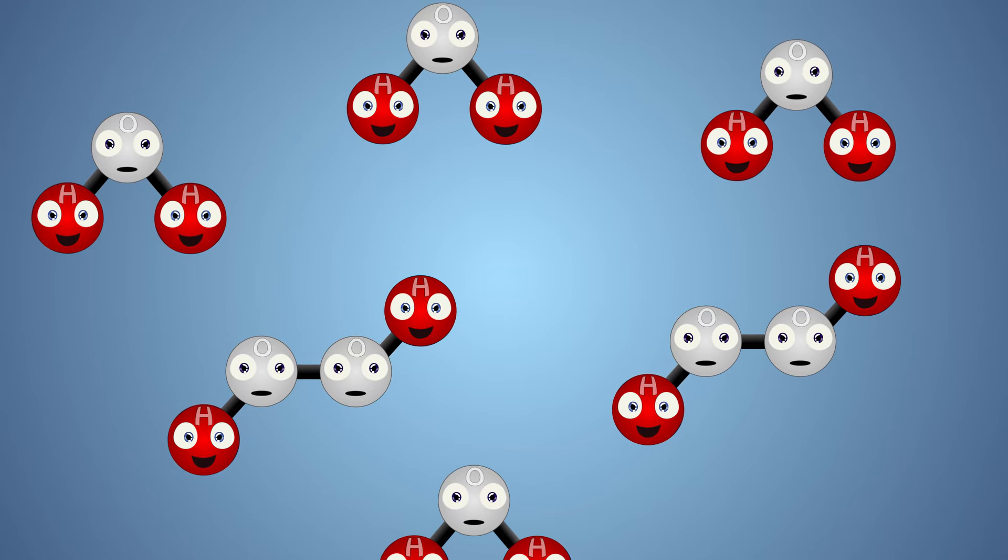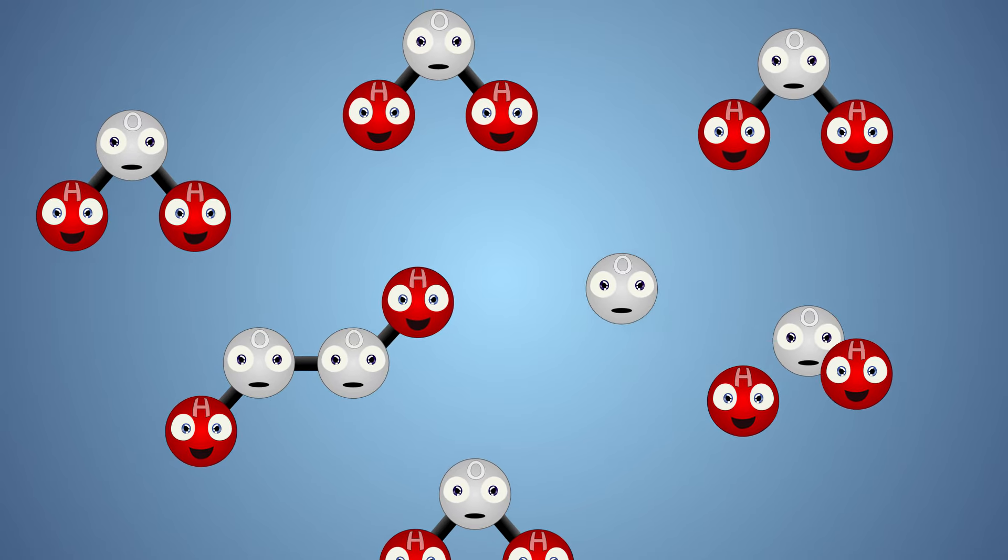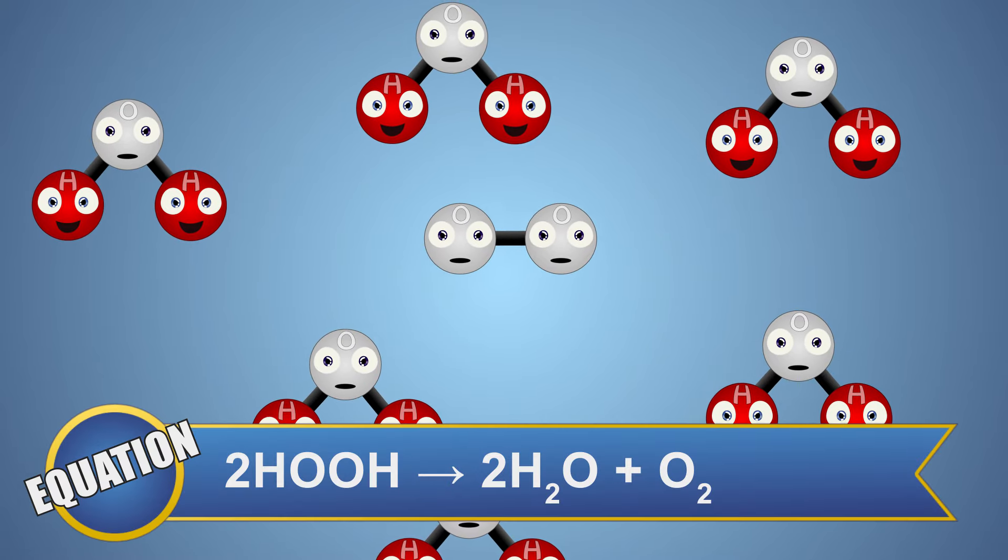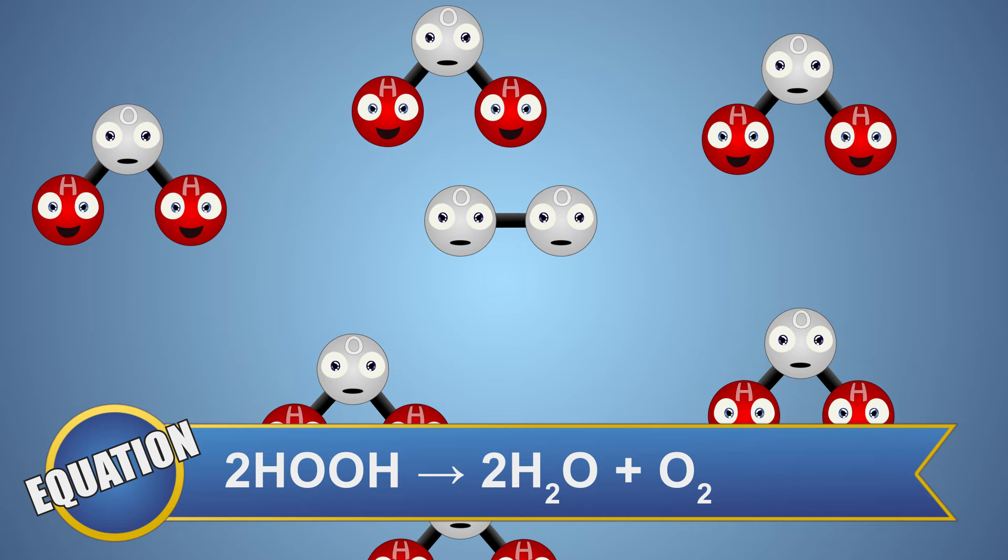Hydrogen peroxide is a relatively unstable compound, and it breaks down on its own into water and oxygen given a little bit of time. The equation of the balanced decomposition of this reaction looks like this.